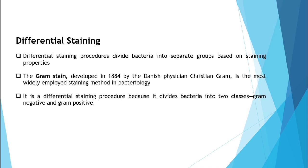Next, we have differential staining. Differential staining procedures divide bacteria into separate groups based on staining properties. For example, Gram staining, developed in 1884 by the Danish physician Christian Gram, is the most widely employed staining method in bacteriology. It divides bacteria into two classes: Gram-negative and Gram-positive.